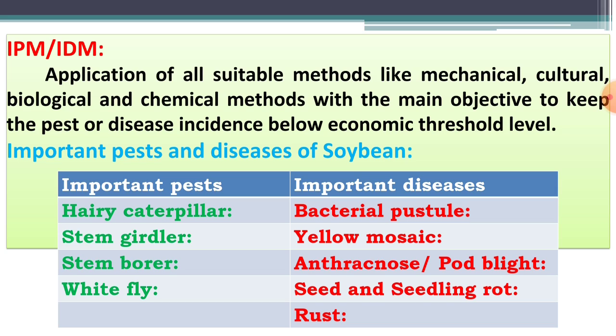The important pests of soybean are: hairy caterpillar, stem girdler, stem borer, and white fly. These are the important pests mostly observed on the soybean crop. The important diseases are bacterial pustule, anthracnose (also called pod blight), seed and seedling rot, and rust. These are the important diseases of soybean crop.